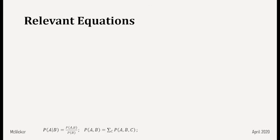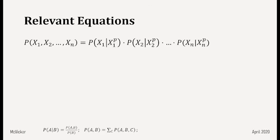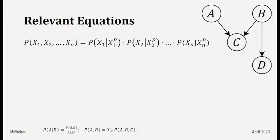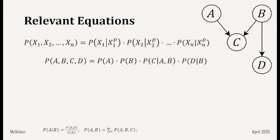The third equation: the probability of X1, X2, X3 all the way to Xn is equal to the probability of X1 given its parents, times the probability of X2 given its parents, as a product all the way through to Xn given its parents. For example, with this Bayesian network, the probability of A, B, C, and D equals each variable's probability given its parents. We'll store this at the bottom for later.